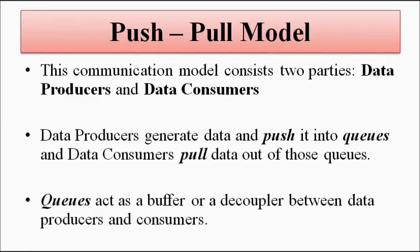You can understand a queue as a waiting list. The data producers push the data into the queues when they upload or send it on the internet. It depends on the type of application, software, or social media platform being used — whether it is based on the push-pull model, client-server model, or publish-subscribe. The data generated by producers gets pushed into the queues, and the data consumers pull the data out of those queues.